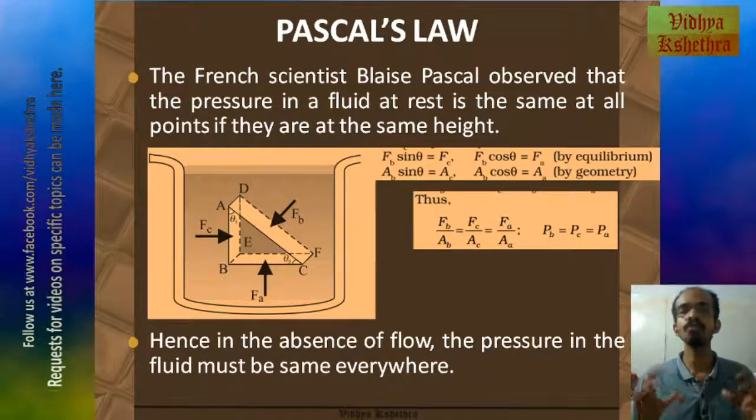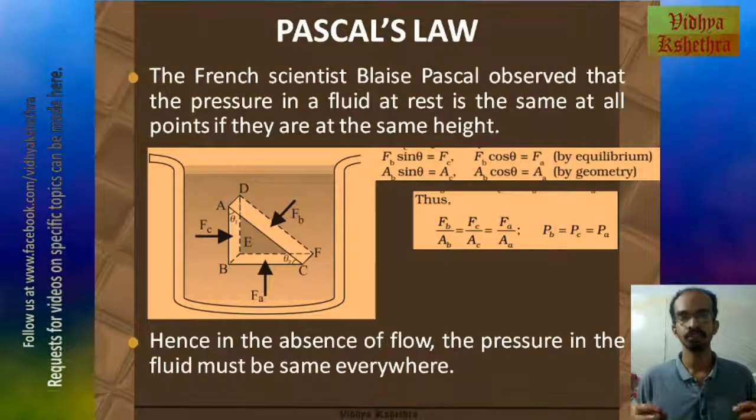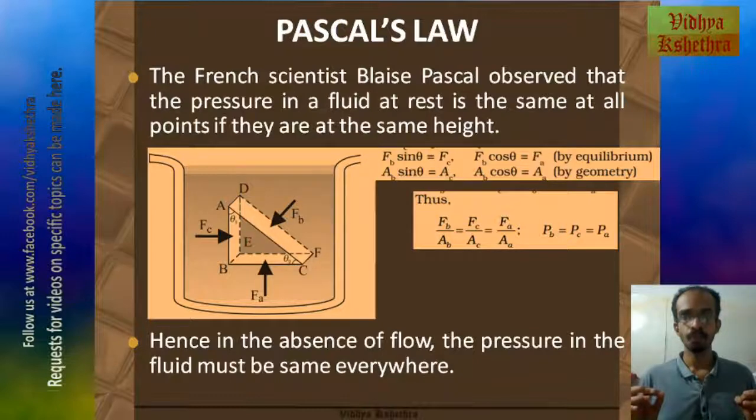Hence in the absence of flow, the pressure in the fluid must be same everywhere. If there is a pressure difference then the fluid starts flowing. For example, wind is a consequence of a pressure change, and when wind blows the pressure in those regions becomes equal.